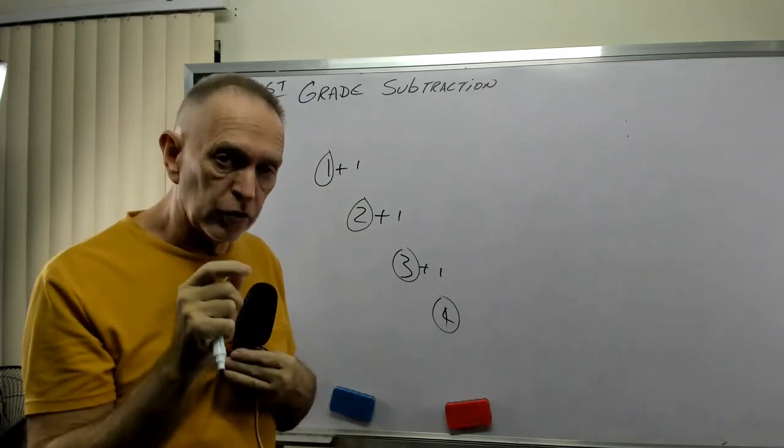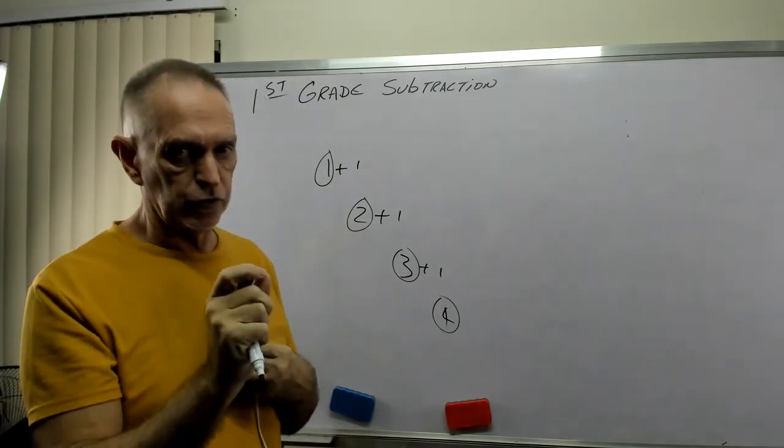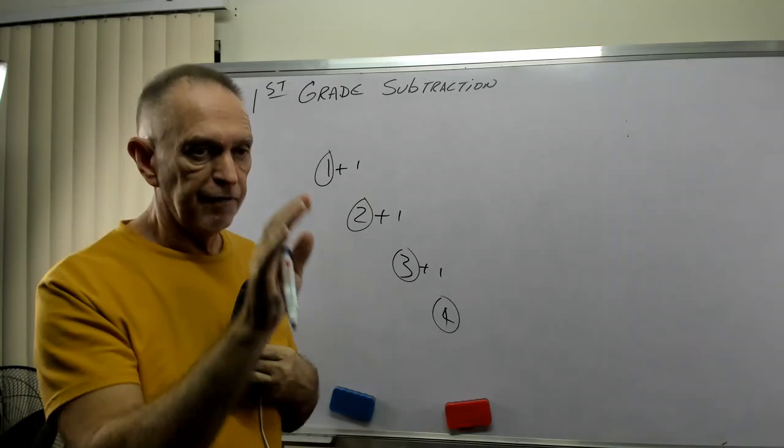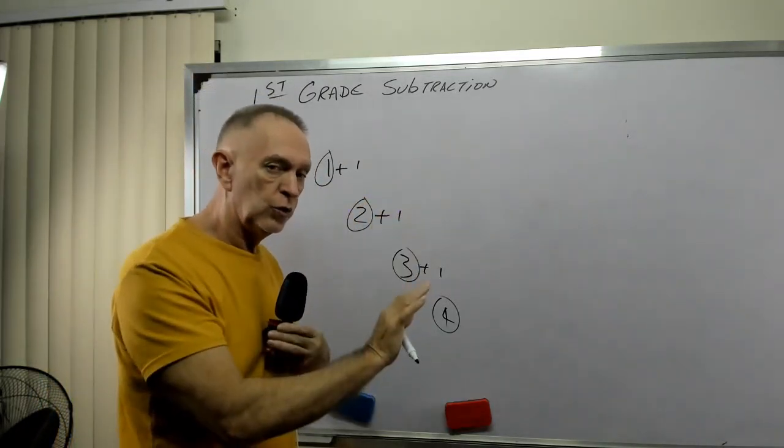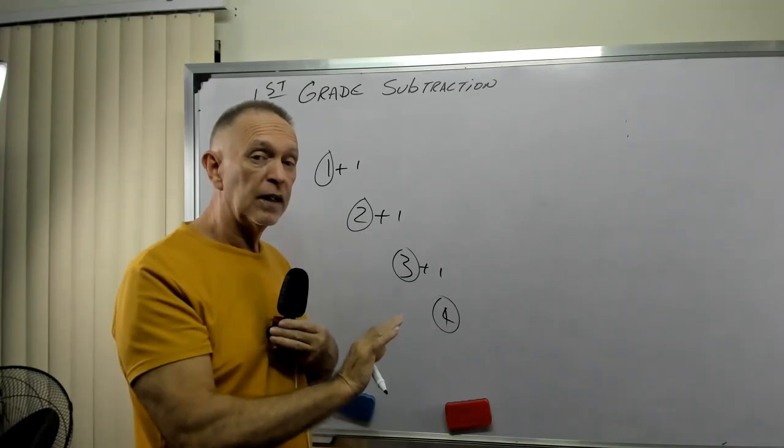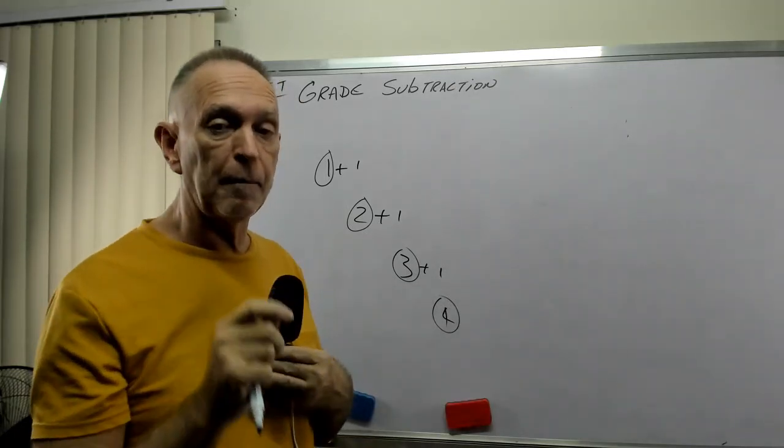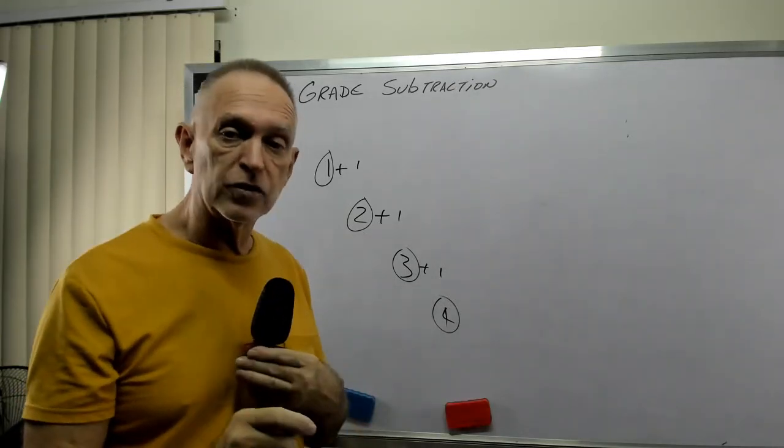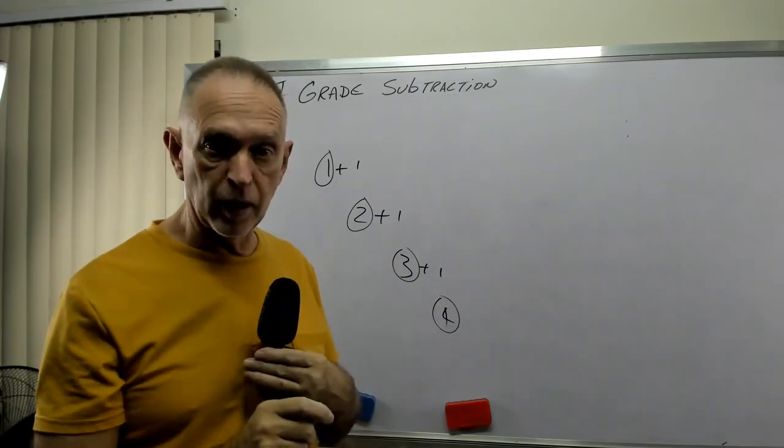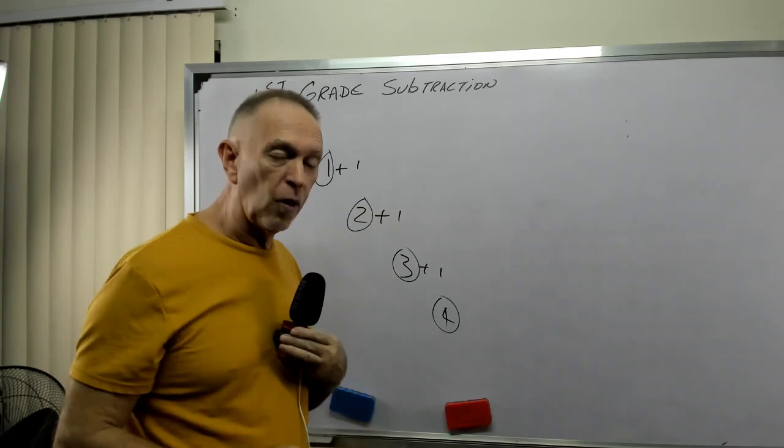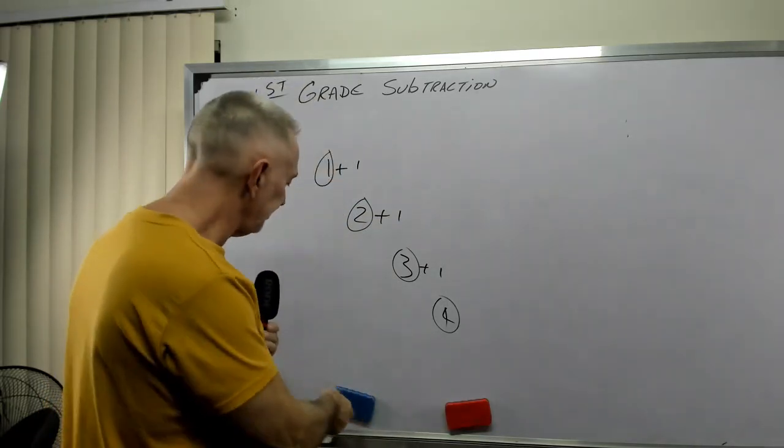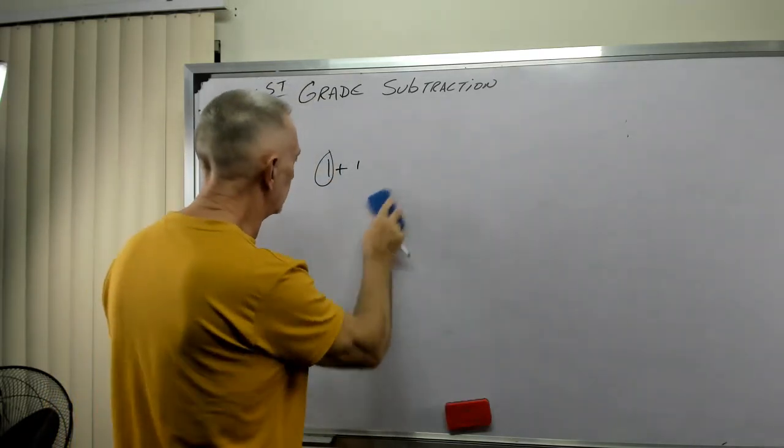If we can learn to count backwards, five, four, three, two, one. If we can practice counting backwards, that's subtraction by one. Whoa. See? You already know how to subtract. All right, let's practice this.